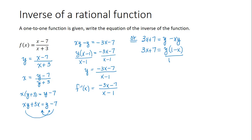Now we can divide each side by 1 minus x to solve for y. So therefore, we get 3x plus 7 divided by 1 minus x, which is equal to y, or f inverse of x.